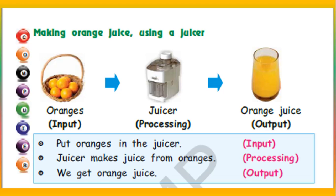Making orange juice using a juicer: first you take some oranges — that is input. You peel those oranges and put them in the juicer. The juicer will process it, so the juicer is the processor. The juice comes out and we collect it in a glass — that is the output. So: put oranges in the juicer — input; juicer makes juice — processing; we get orange juice — output.